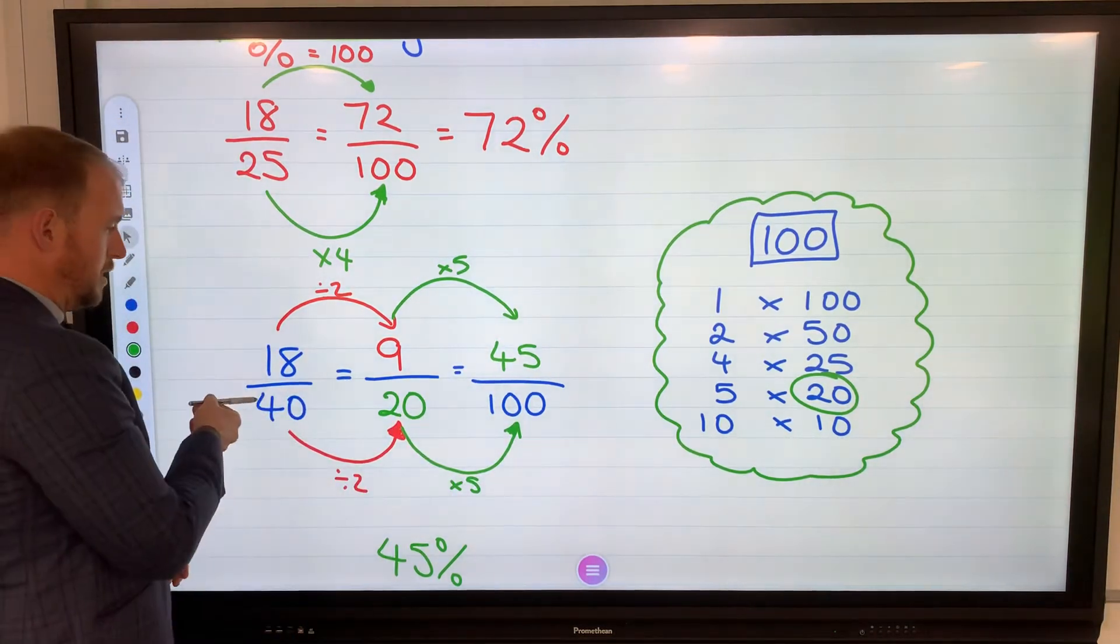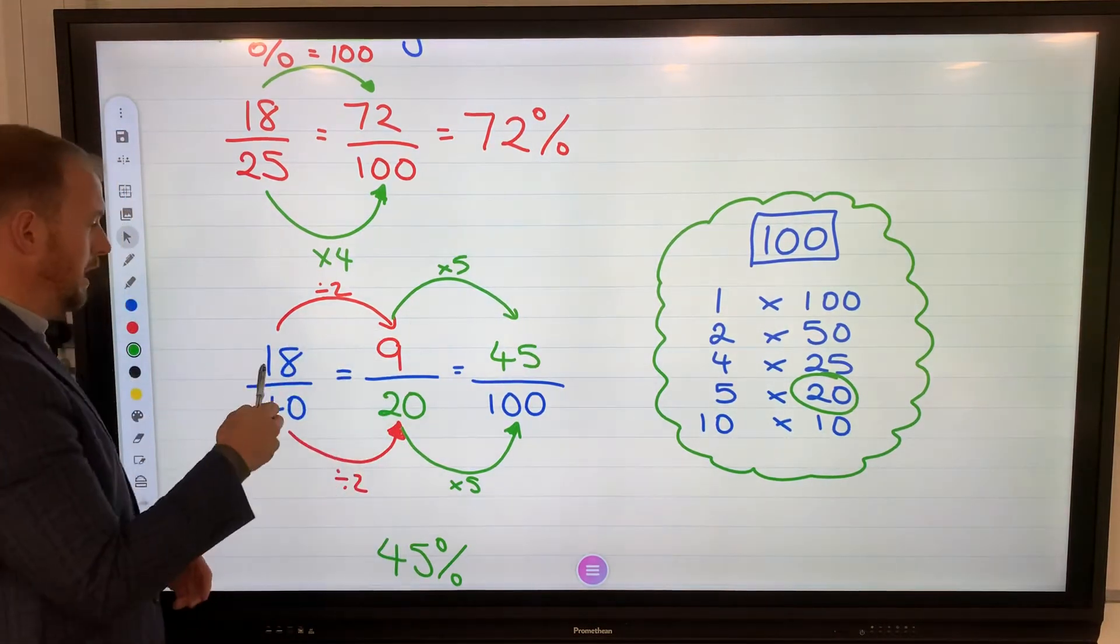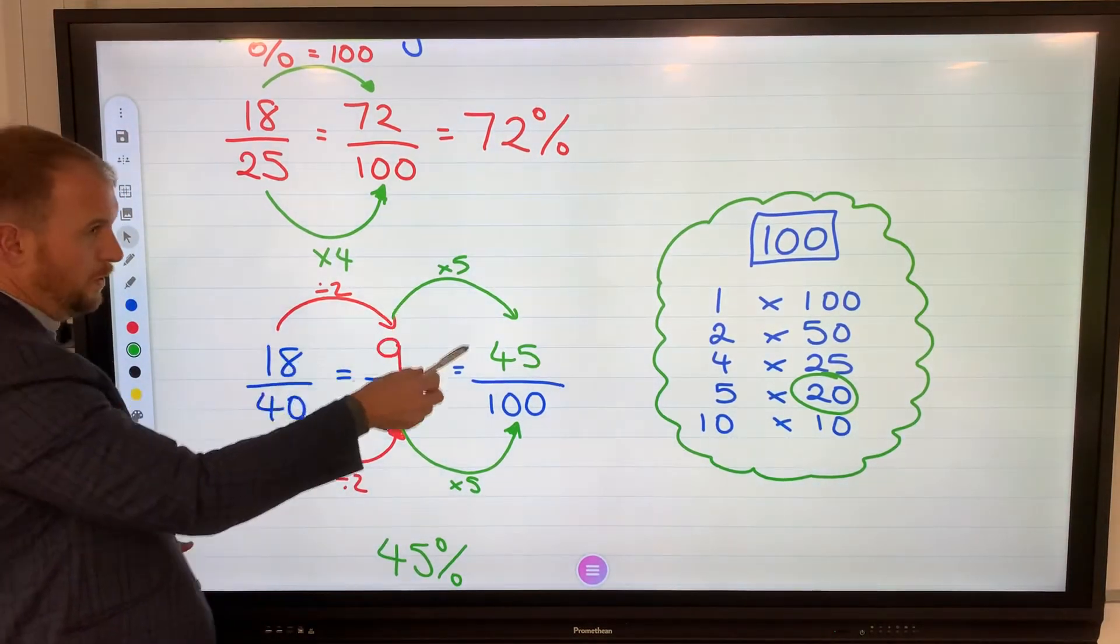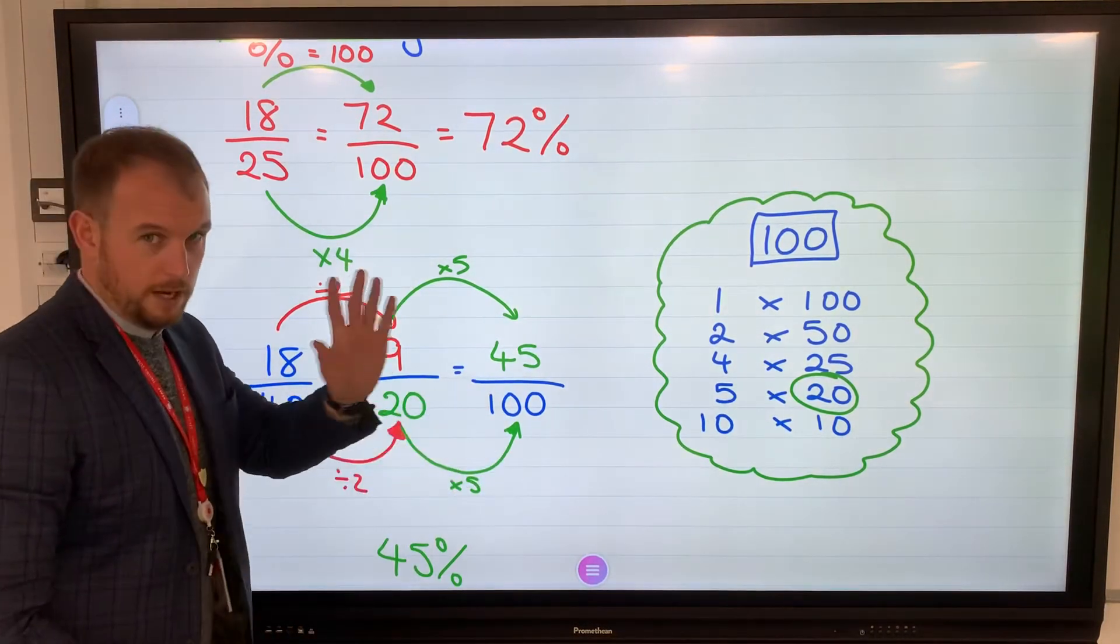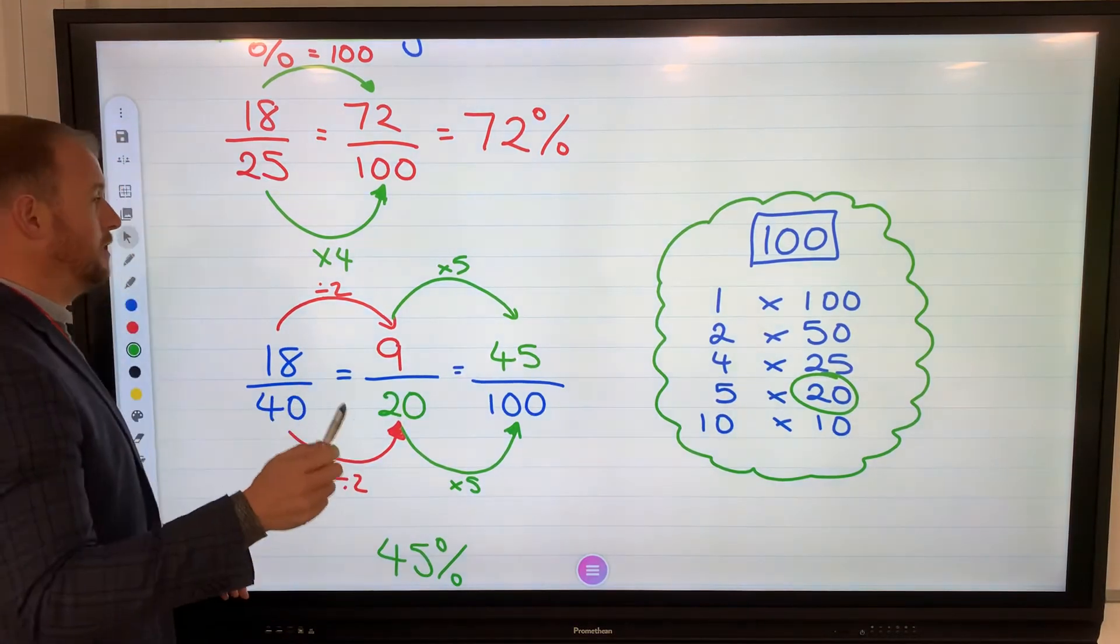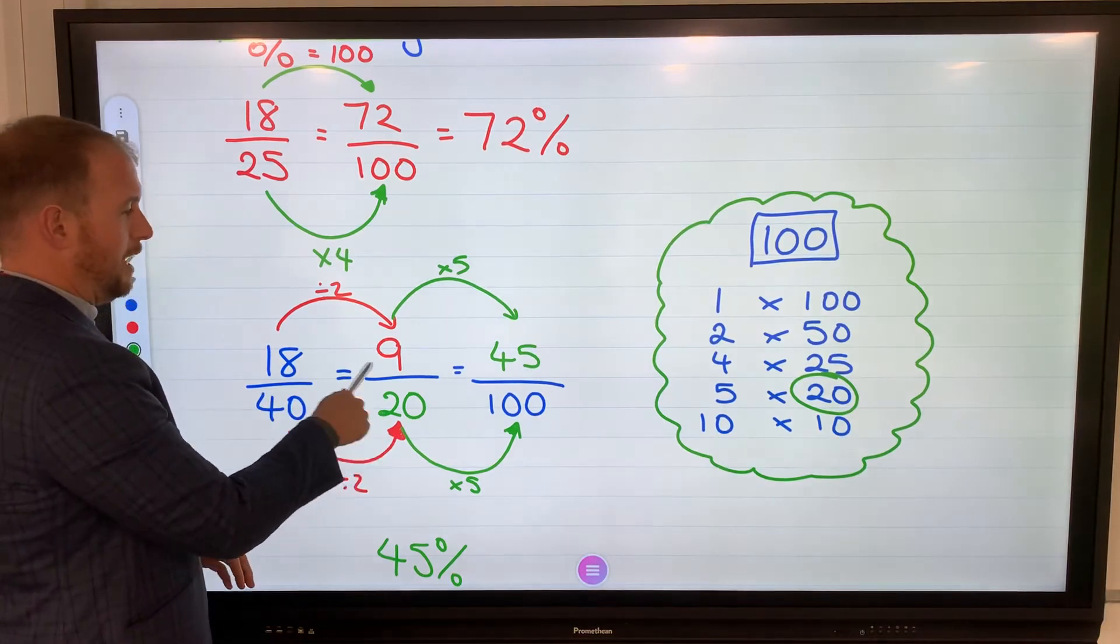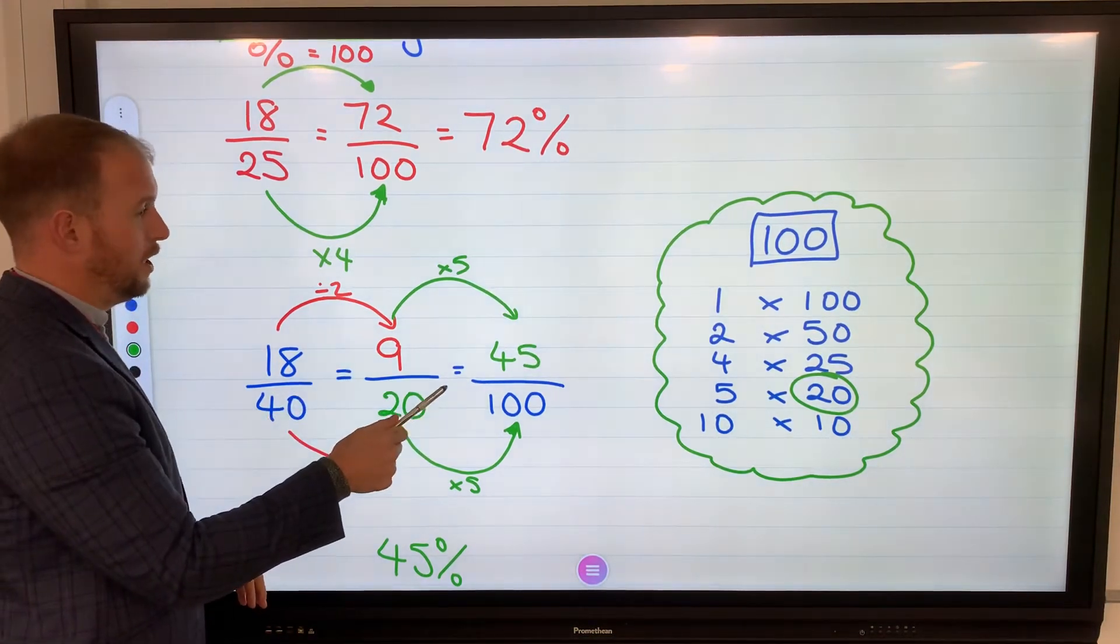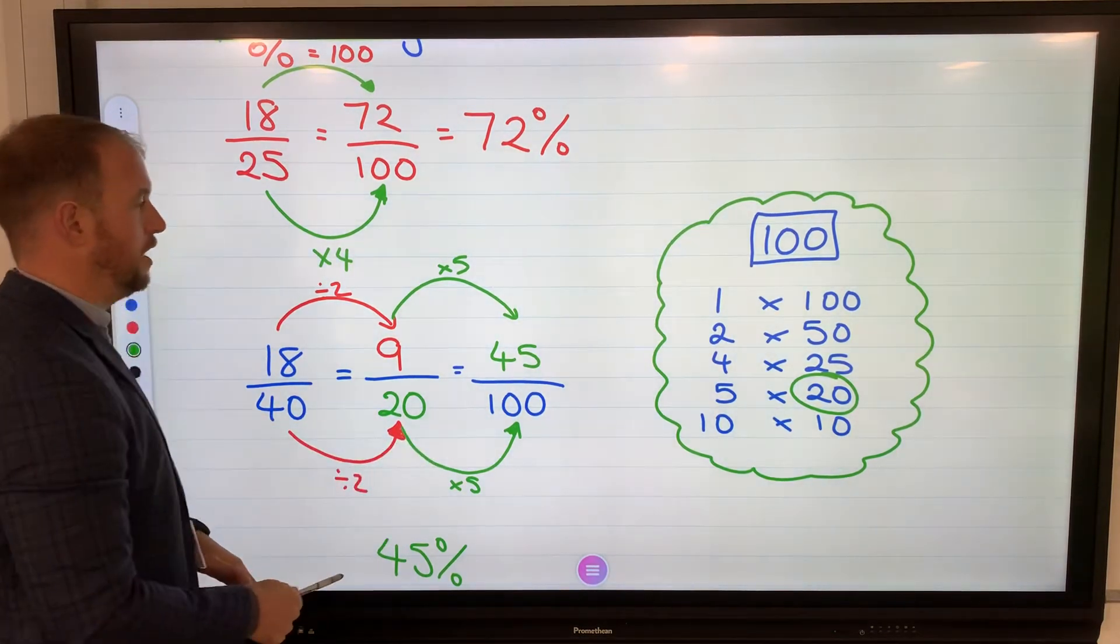Yes, you could have just multiplied it by 2.5, did the same to the top, times it by 2.5. 2 eighteens are 36, half of 18 is 9, add it on, you get 45. I understand if you find it that way, brilliant, crack on. If you find that too difficult, find a middle step, where it's a common factor. You can see here, 20 is a common factor of 40 and 100.